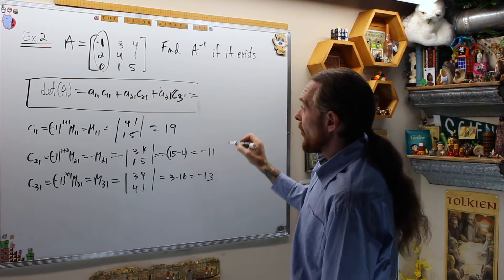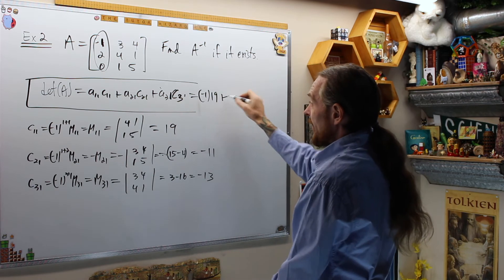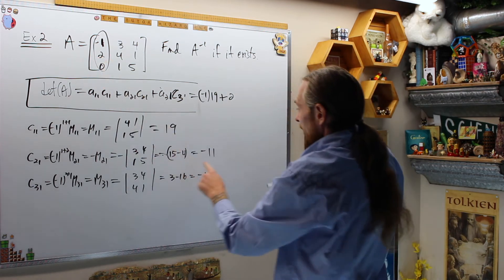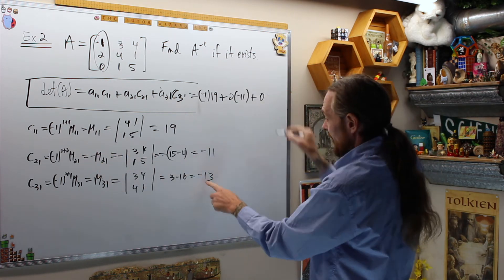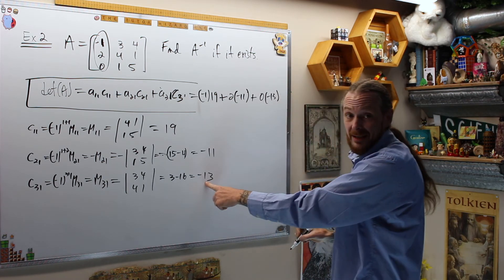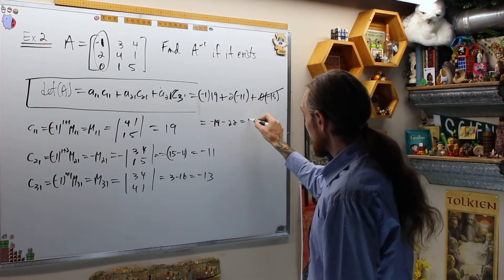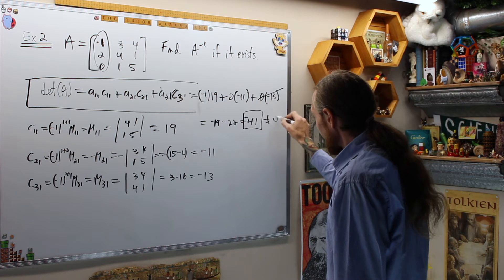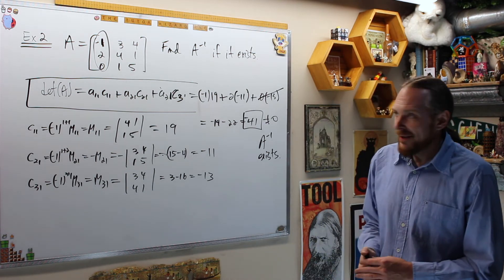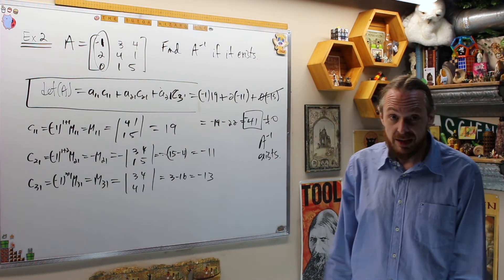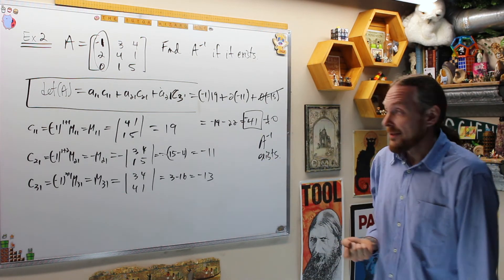Using cofactor expansion along column one: a_11 = -1 times C_11 = 19, plus a_21 = 2 times C_21 = -11, plus zero. That gives -19 - 22 = -41, which is not zero. So A inverse exists. Compute three cofactors, pick a row or column with as many zeros as possible, compute the cofactors needed for the determinant. If it's not zero, keep going; if it is zero, the inverse doesn't exist.